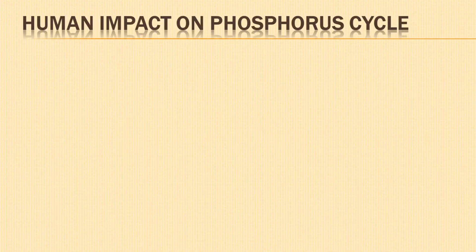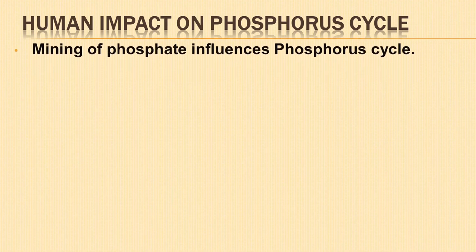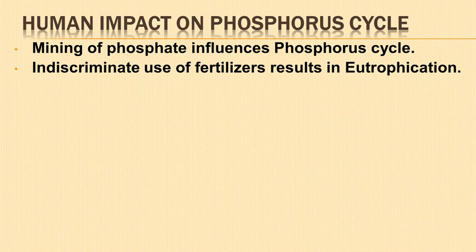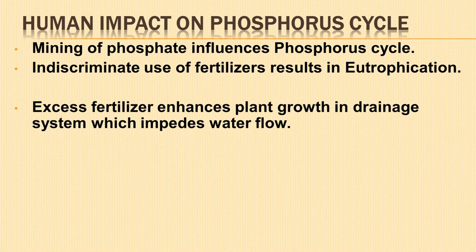Finally, let us understand the human impact on the phosphorus cycle. Mining of phosphate and its release into the ecosystem greatly influences the phosphorus cycle. Indiscriminate use of fertilizers containing nitrogen and phosphorus in agricultural land may cause them to move into water bodies. This results in the overgrowth of algae called algal bloom, leading to oxygen deficiency which affects aquatic life. The gradual increase in the concentration of plant nutrients in an aquatic ecosystem is known as eutrophication, which is detrimental to the ecosystem. Excessive plant growth due to drainage of fertilizers into water bodies impedes water flow.